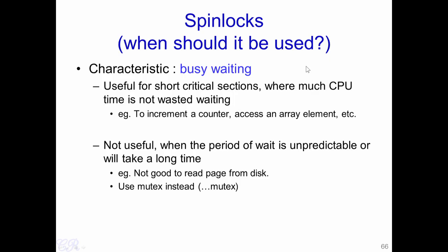Where would we actually use spin locks? Spin locks are useful when we have short critical sections and we know that we do not have to waste too much time waiting. For instance, if we just want to increment a shared counter, or to access an array element, then a spin lock would be preferred. These operations are assumed not to have too much overhead.